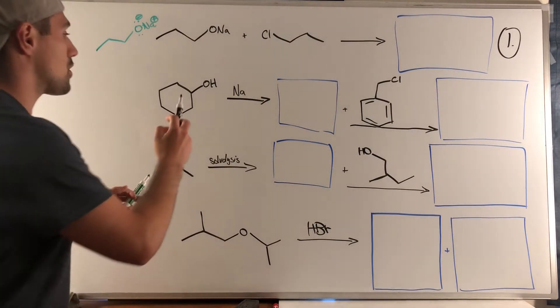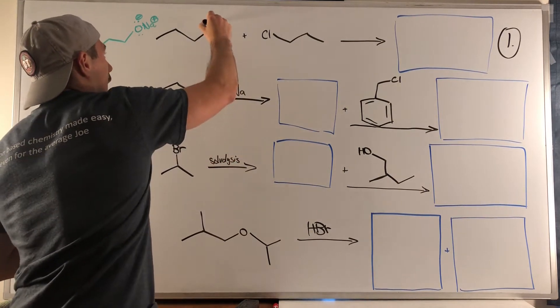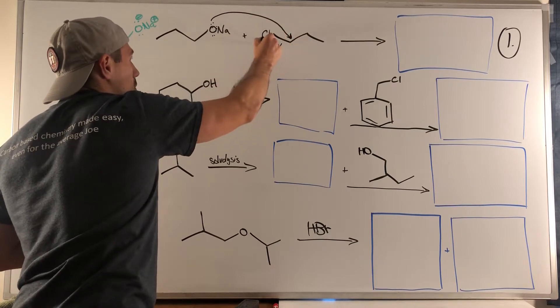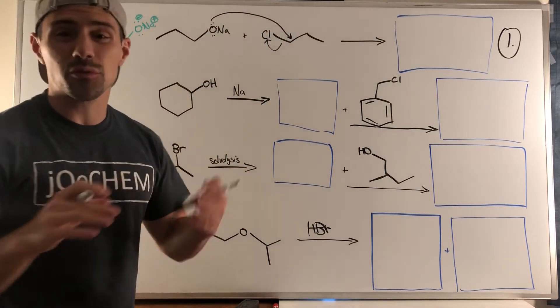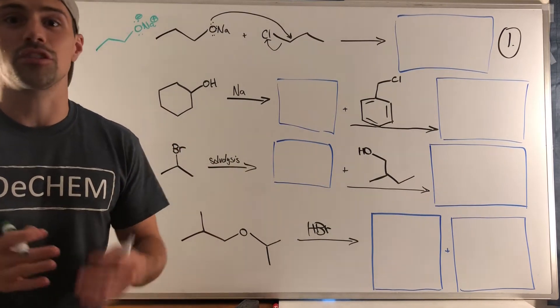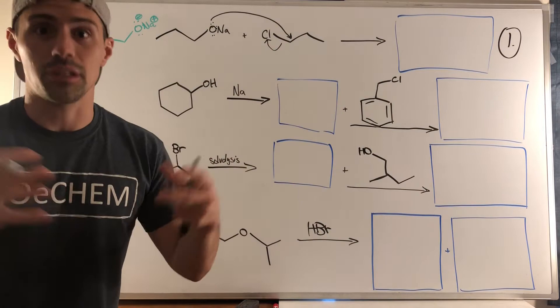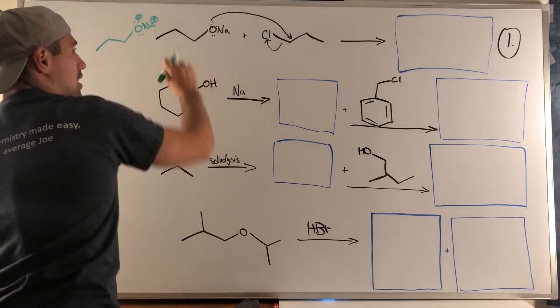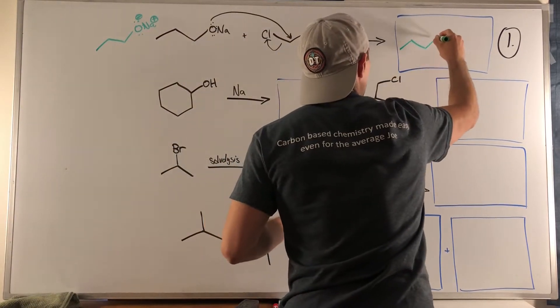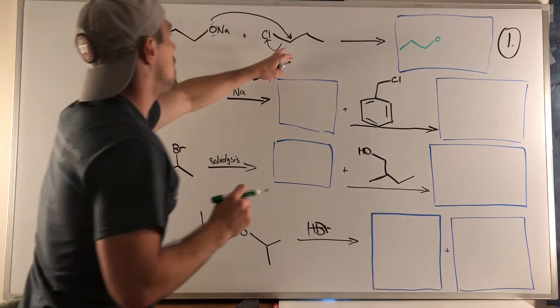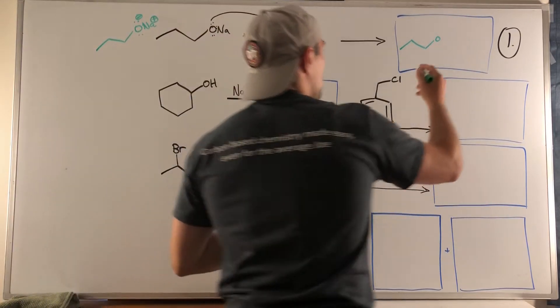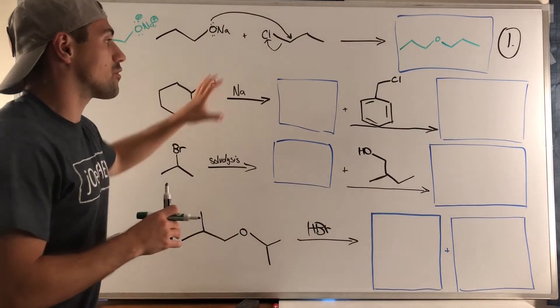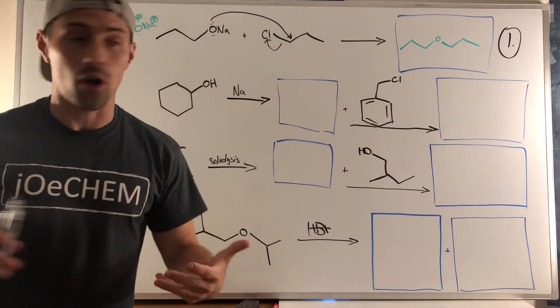The arrows for this would absolutely go: that oxygen is going to use one of its lone pairs, it's going to attack this carbon right here, we will eject our leaving group. Even though this is SN2, we don't have to worry about any stereochemical inversion. Our focus is going to be the regiochemistry here, just connecting the pieces. We have one, two, three carbons, then an oxygen. Over here I'll do one, two, and three, there's our oxygen. On the other side of this ether, you can see we're going to have one, two, and three, so it's symmetrical.